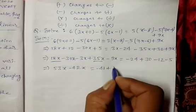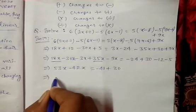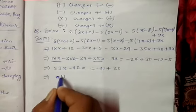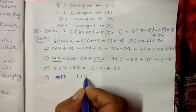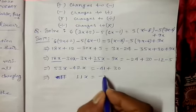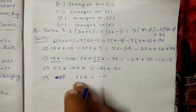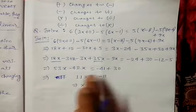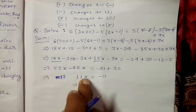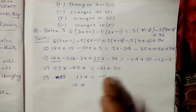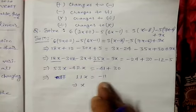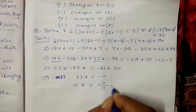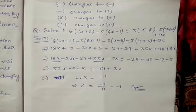So we get 11x equals minus 11. Dividing both sides by 11, x equals minus 11 divided by 11, which gives x equals minus 1. Therefore the solution is x = -1.